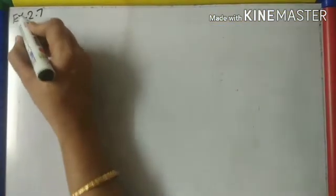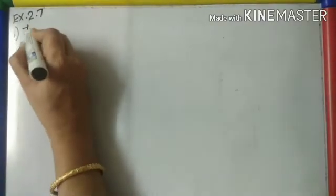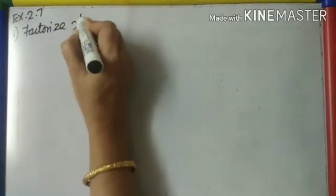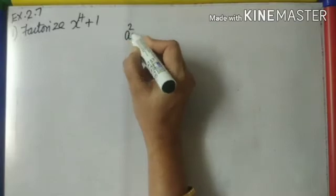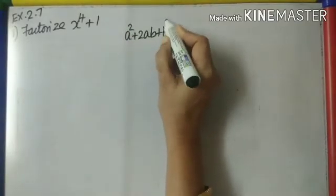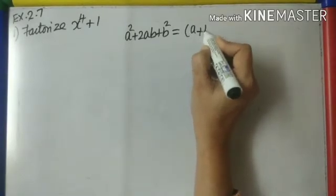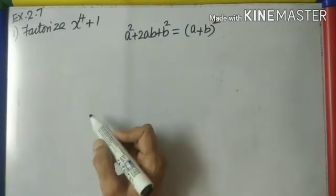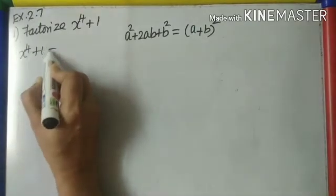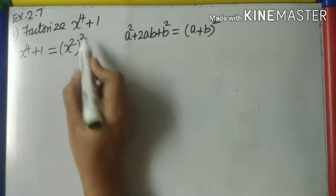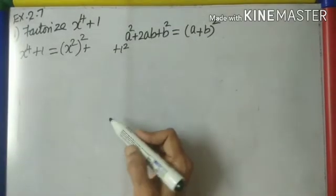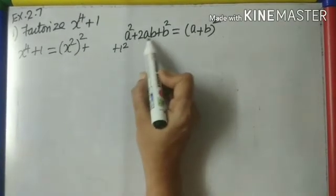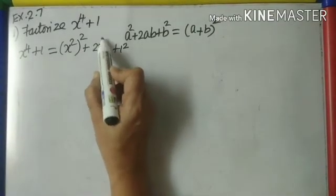Exercise 2.7 — some more algebraic facts. The first question is: factorize x⁴ + 1. The hint in the question is to try completing the square. To complete the square, we want to achieve the form a² + 2ab + b², which can be written as (a+b)². So first rewrite x⁴ as (x²)² and 1 as 1². What is missing is the 2ab term.